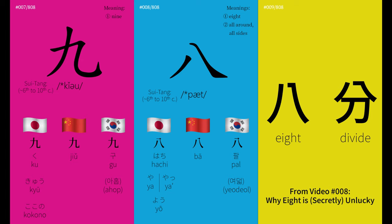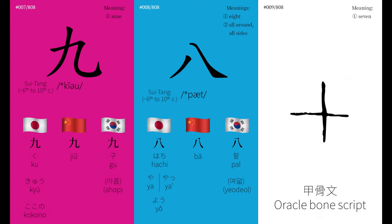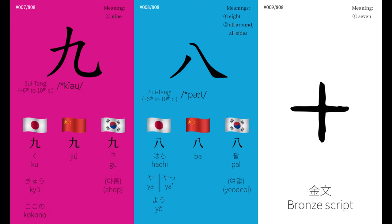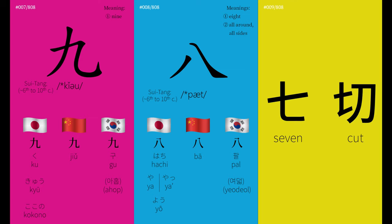We discussed how the character for 8 used to mean divide, and how that meaning was separated off by adding the character for knife. Interestingly, the same is also true for 7. Beginning as a horizontal line split by a vertical line, the character originally meant to cut. The symbol got taken over to mean 7, and the new symbol was created for cut by adding the character for knife. Sadly, the confusion did not stop there.